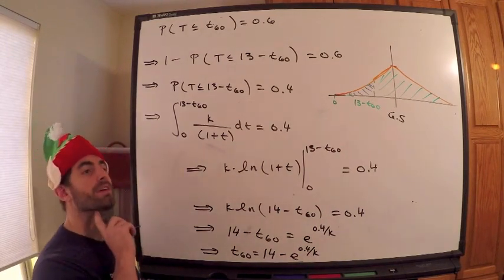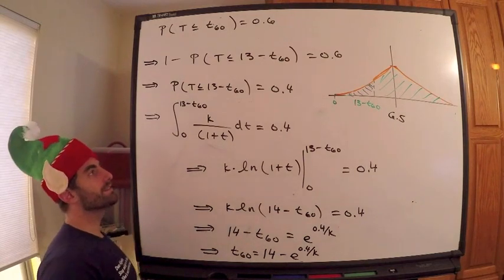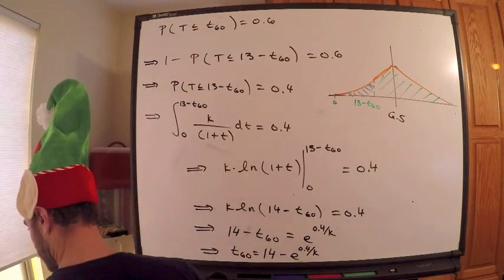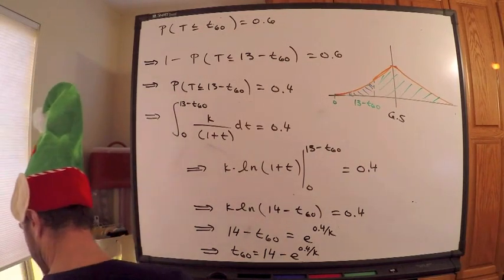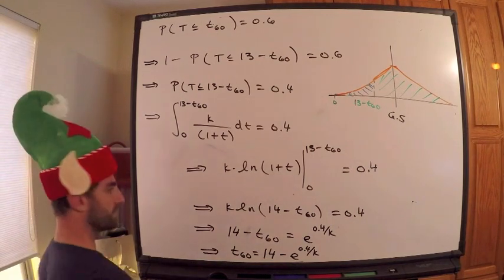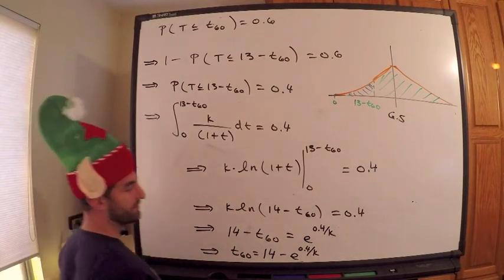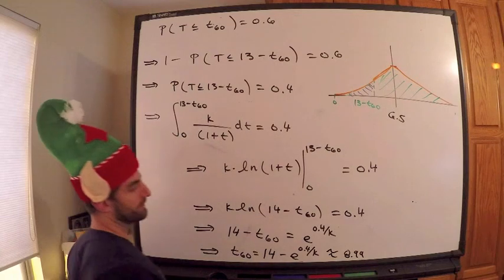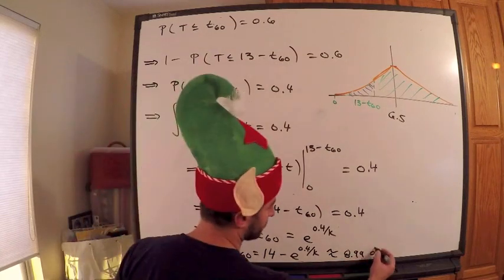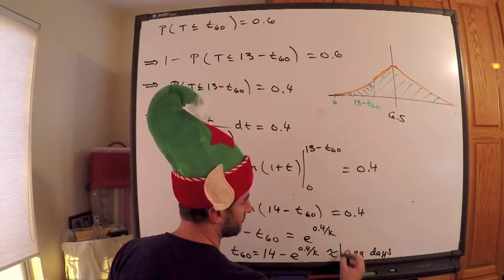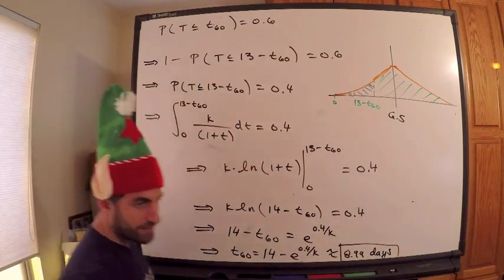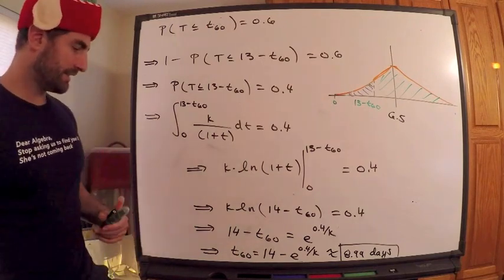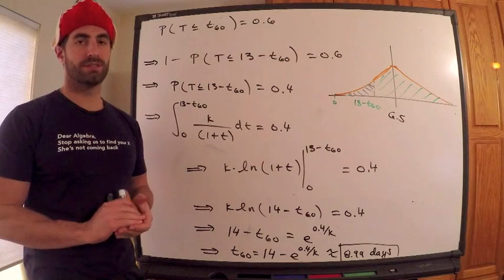k, remember, was 1 over twice the natural log of 7.5. I think that's what it was. I had erased it. But this should give you approximately 8.99. This would be days. So conclusion is that approximately 9 days elapsed before this student decided to register. So kind of a slacker.